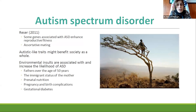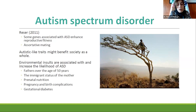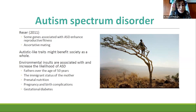Some researchers examined the hypothesis that some genes associated with ASD did in fact enhance reproductive fitness. For example, during times when nutritional resources were sparse, those who could demand the group and look for resources by themselves were at an advantage. It is also claimed that the most severe cases of ASD may be due to assortative mating. Environmental insults can increase the likelihood of ASD, including father being over age 50, immigrant status of the mother, prenatal nutrition, pregnancy and birth complications, and gestational diabetes.